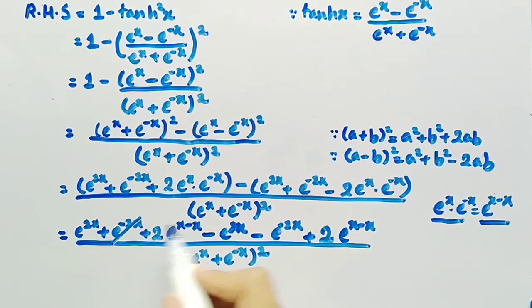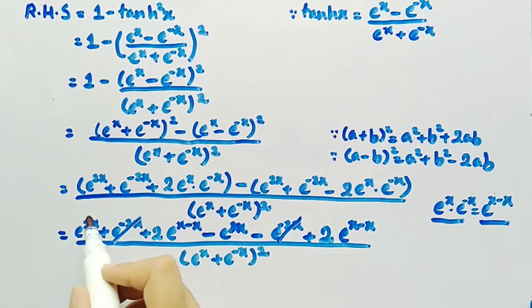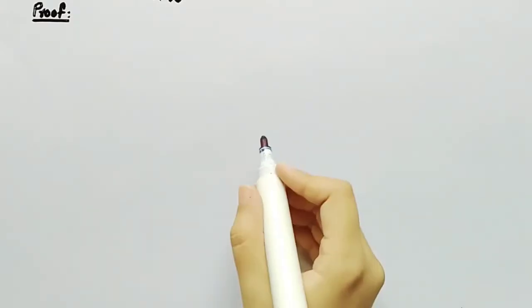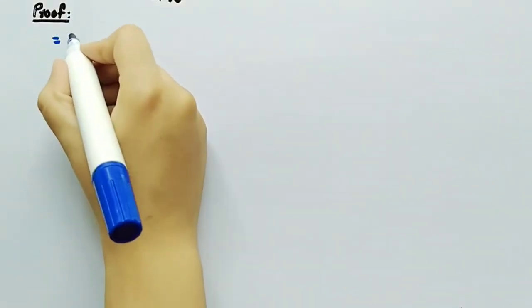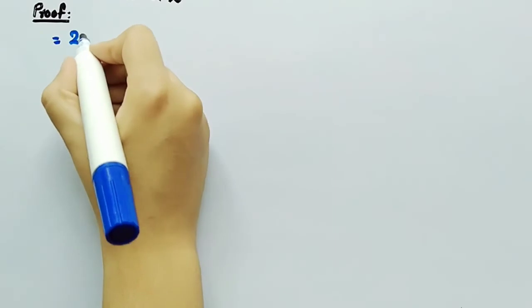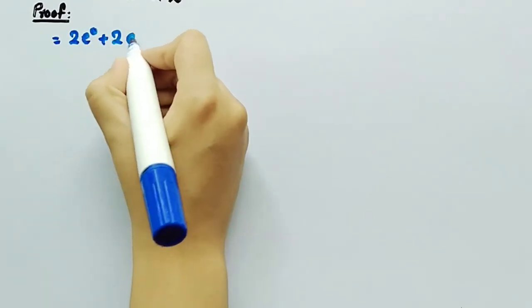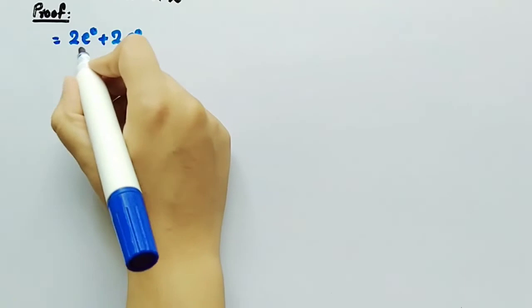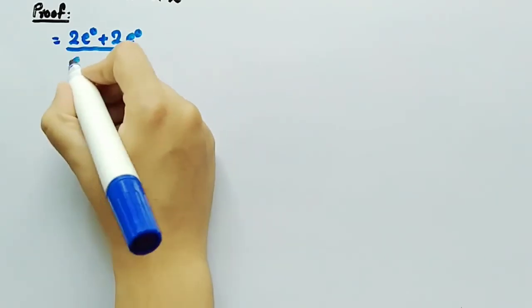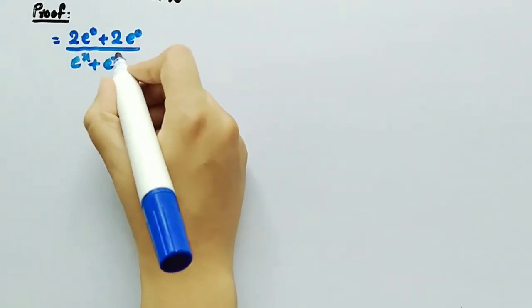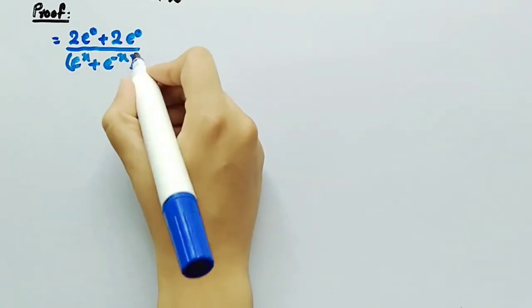The e²ˣ and e⁻²ˣ terms cancel out with each other, and we are left with 2·e⁰ plus 2·e⁰, divided by (eˣ plus e⁻ˣ)².